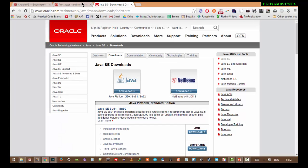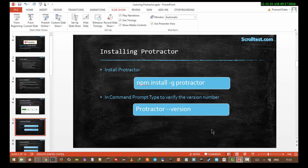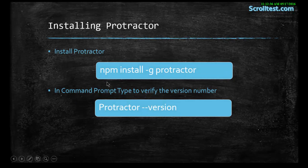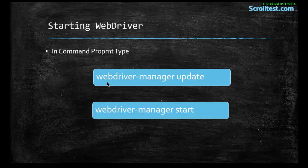Once Java JDK is installed, if you have already installed Protractor on your machine you can verify it by running the command 'protractor --version' on your command line. After that, you need to update your WebDriver manager. Protractor comes with a WebDriver manager already integrated. You just have to run the command 'webdriver-manager update' to update the drivers. After that you can start the WebDriver manager to run your test cases.